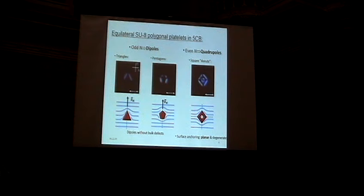Now these square donuts, you get quadrupoles. And let me mention that the surface anchoring is planar and degenerate. And in the case of these dipoles, another interesting fact is that there's no bulk defects here, as in the case of spheres with homeotropic anchoring. So you can imagine scaling this down to very small size scales and still getting dipoles.